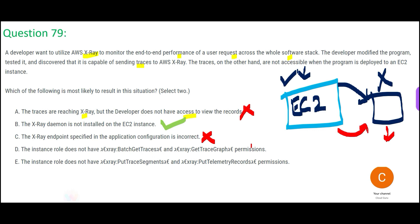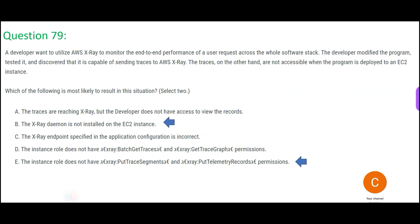Options D and E involve IAM role permissions. EC2 needs to PUT traces into X-Ray, not GET them. Option D mentions get-traces and get-trace-graph permissions, which are for reading — not writing — so that is wrong. Option E says the EC2 role does not have put-trace-segments or put-telemetry-records permissions, which means EC2 cannot send trace data to X-Ray. That is the correct second answer.